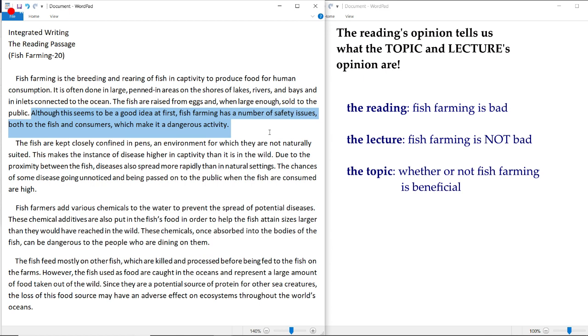So the reading is clearly saying that fish farming is bad. So the topic is whether or not fish farming is beneficial, and the lecturer is going to say that fish farming is okay, to say the least. So the professor is going to definitely argue against the idea that it's bad, that it's detrimental, but we're not sure if the professor is going to say that fish farming is good just yet.